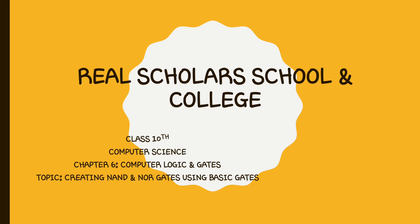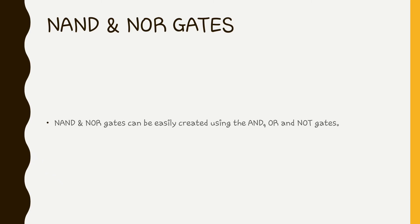Today what we have to learn is we will design circuits using our basic gates, which are called AND, OR, and NOT. After that, you will see that NAND and NOR gates can be easily created using the AND, OR, and NOT gates. These are our basic gates.